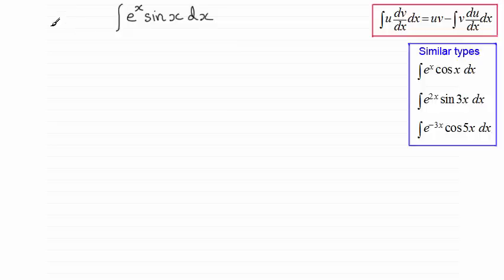So what we do is let I, obviously you can have any letter you like, be equal to this integral. In this case, the integral of e to the x sine x with respect to x. And then we use integration by parts, and we need to take one of these parts as being u and the other part as being dv dx. And with questions like this, it doesn't matter which part you take as u. So I'm going to take the first part then, e to the power x, as being the u, and the sine x as being my dv by dx.